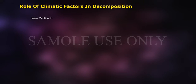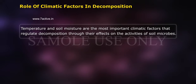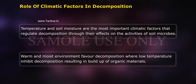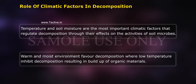Temperature and soil moisture are the most important climatic factors that regulate decomposition through their effects on the activities of soil microbes. Warm and moist environments favour decomposition, whereas low temperature inhibits decomposition, resulting in build-up of organic materials.